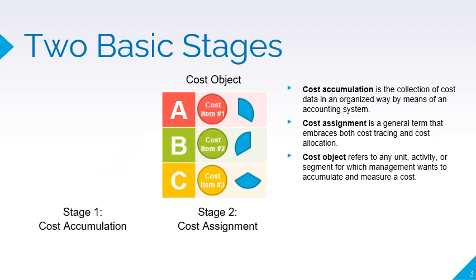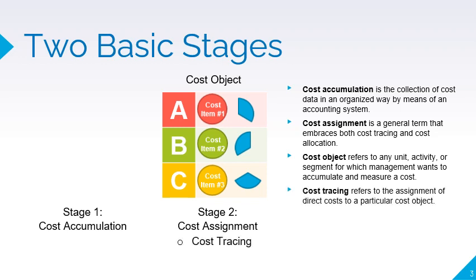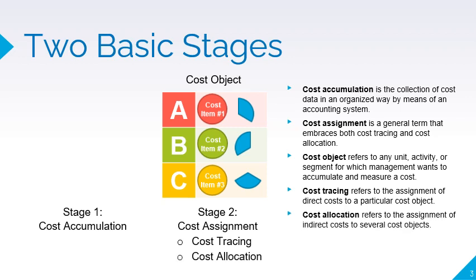Take note of the difference between the terms trace and allocate. Cost tracing refers to the assignment of direct costs to a particular cost object, whereas cost allocation refers to the assignment of indirect costs or common costs to several cost objects.